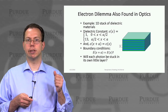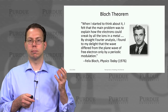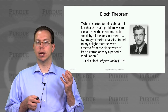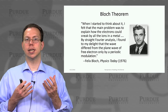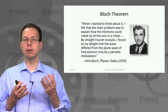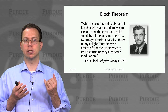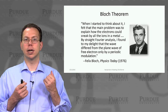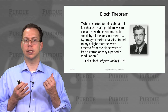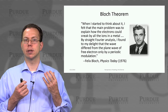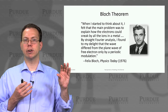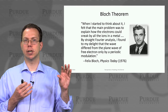So it's not necessarily obvious. But Felix Bloch actually thought about this problem for a long time. He didn't understand at first how the electron could sneak by all the ions in a metal. But he performed some analysis — straight Fourier analysis based on Fourier series — and he found to his delight that the wave resulting from this sort of problem only differs from the plane wave of a free electron by a periodic modulation.